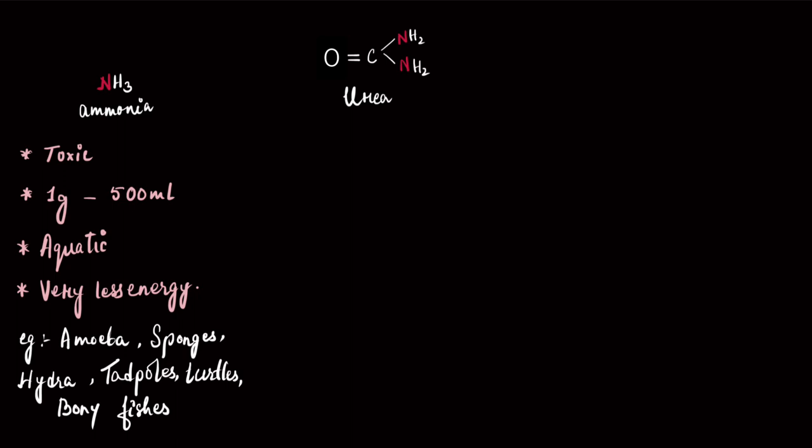And urea is much, much less toxic. That means we can afford to keep them in our body for some time. And also, the urea which is formed, it needs less water to be sent out of the body. One gram requires just 50 ml. So that's the reason it is a very good fit for the terrestrial life. But it also comes with a cost. Forming urea inside the body from ammonia requires ATP, so it needs energy.